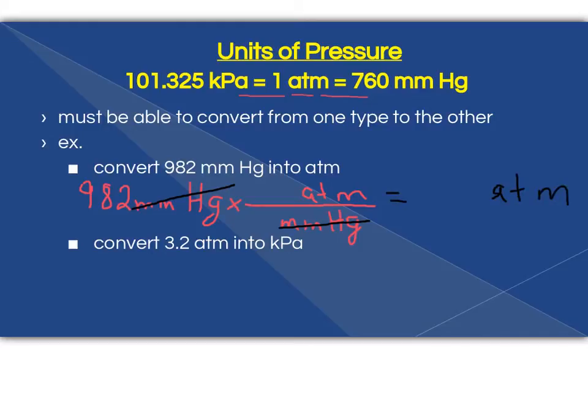So we need to be able to cross out the other two units. From my conversion up here that I'm putting in a box right now, I know that I am going to have 760 millimeters of mercury for every one atm. In order to get my answer here, I'm going to do 982 divided by 760, and I am going to get 1.29 atm.